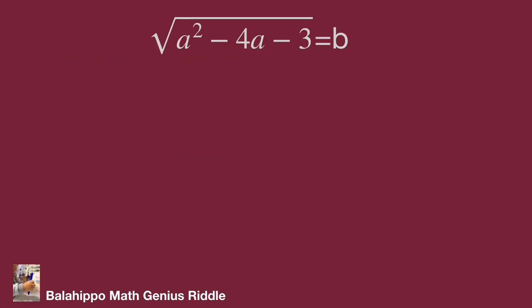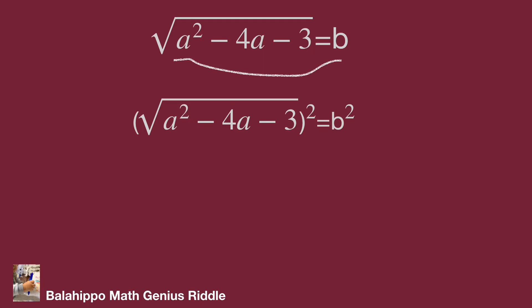The given information: quantity a squared minus 4a minus 3, square root, equal to b. How should we handle it? I'm going to make the connection from a squared to b. Let b become b squared — so we square both sides of this equation. This simplifies to a squared minus 4a minus 3 equal to b squared.